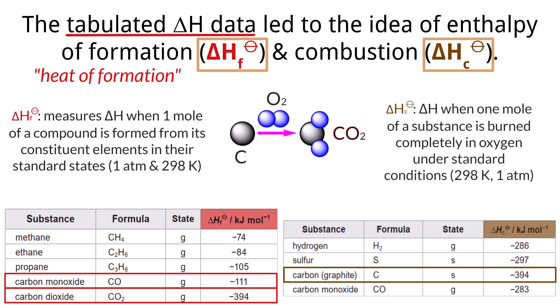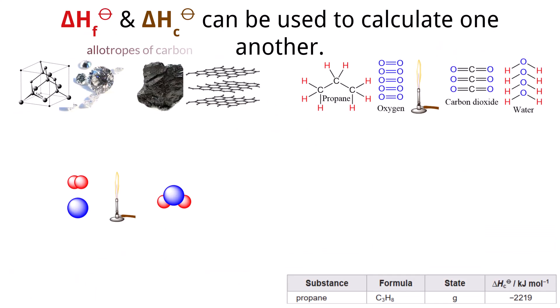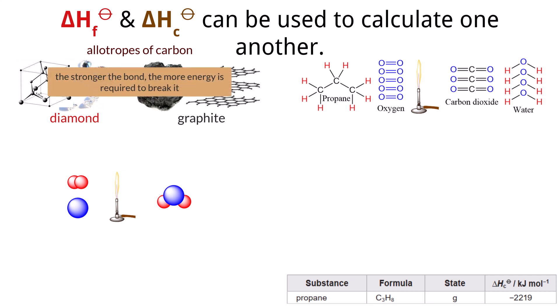The standard enthalpy change of combustion is the enthalpy change that occurs when one mole of a substance is burned completely in oxygen under standard conditions. But how would this affect allotropes of an element such as diamond and graphite for carbon? Hopefully you intuit that the stronger the bond, the more energy is required to break that bond.